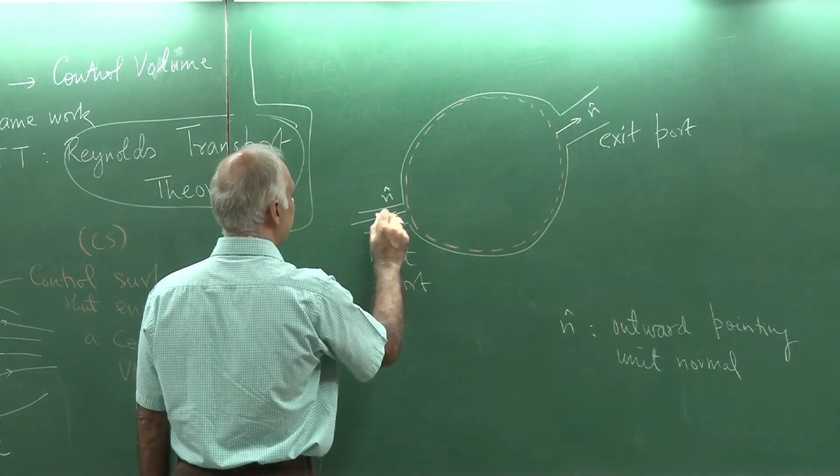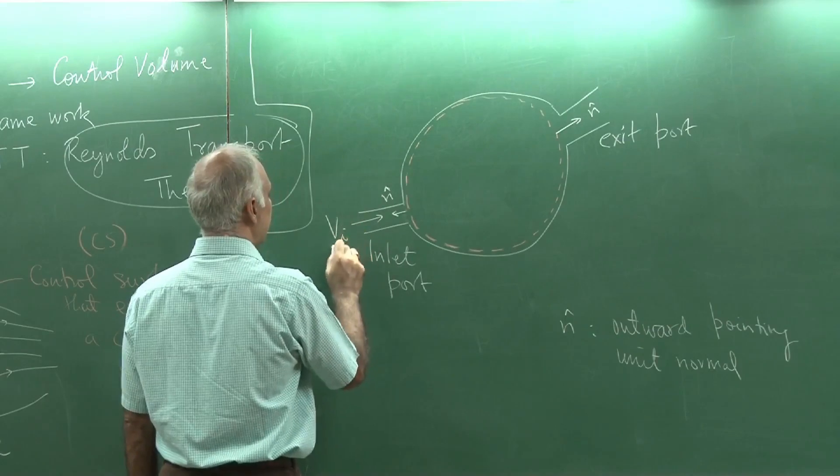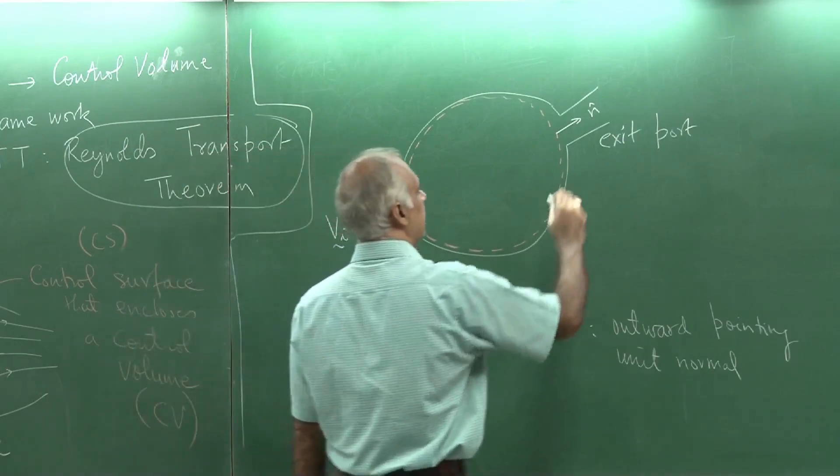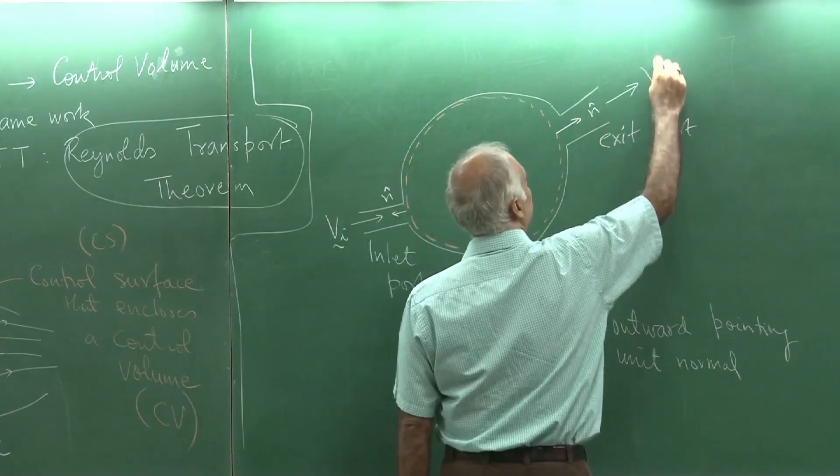Then, at the inlet port, I could say well, this is my inlet velocity v_i and this could be my exit velocity v_e. That would be the exit velocity.